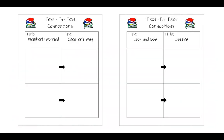This is what they're going to look like. They will be two separate assignments — they will not come together, but I wanted to show you what they were going to look like. One is Wemberley Worried making a text-to-text connection to Chester's Way. The other is going to be connecting the texts Leon and Bob and Jessica. Good luck, boys and girls.